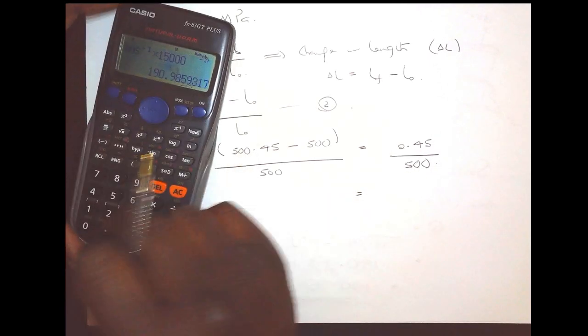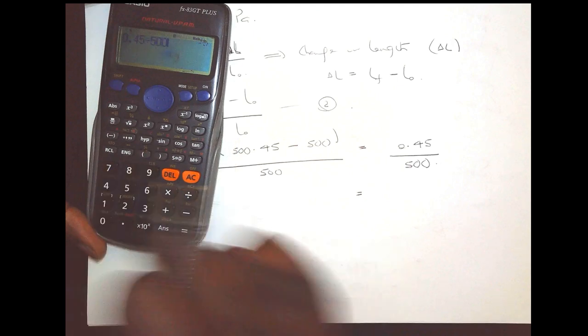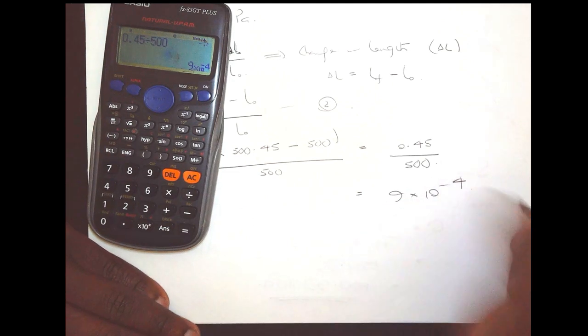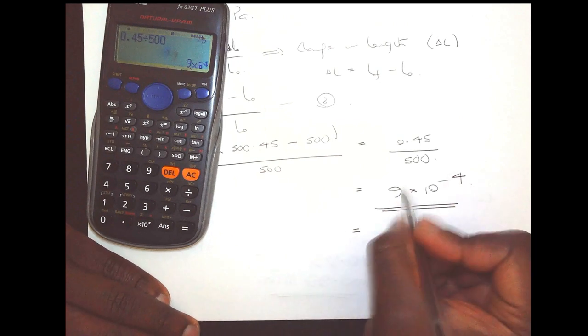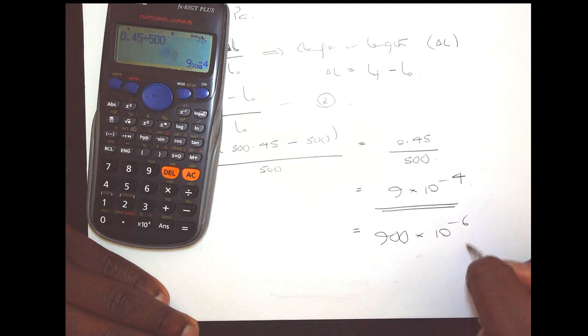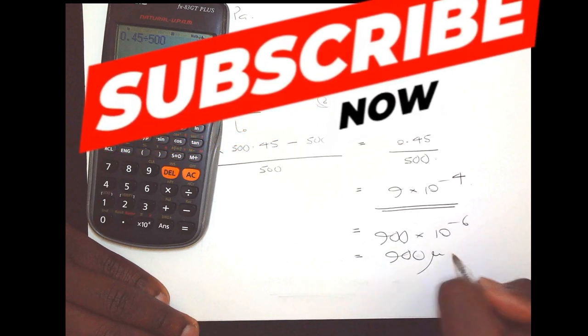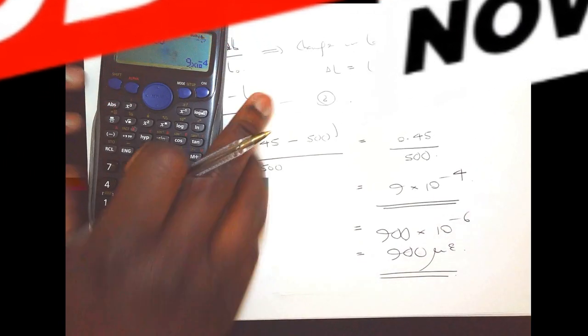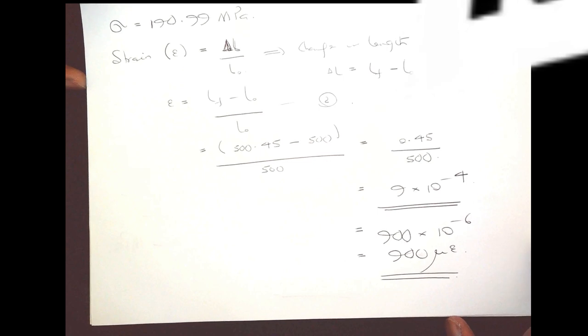And that should give us 0.45 divided by 500, which gives us 9 times 10 to the power minus 4. Or alternatively, you can write it as 900 times 10 to the power minus 6, which is the same as 900 micron strain or microstrain if you want to write it in that context. So either way is correct.